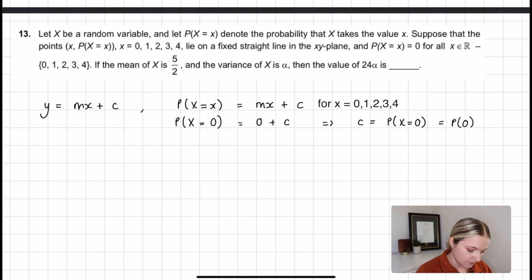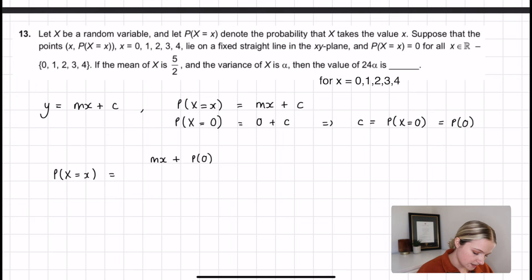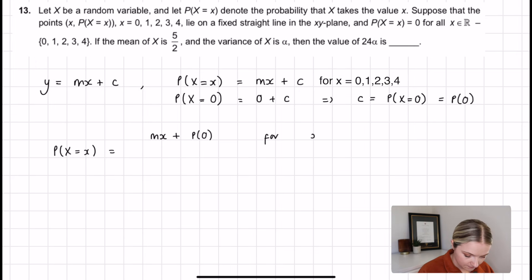Now we know what c is, we can write a formula for P(X=x) for these different numbers. Because we know that they're on a fixed straight line, we can say that P(X=x) equals mx plus P(0) for x in 0 to 4, because we're told that. But we're told that outside of that range, P(X=x) equals 0, so we'll put otherwise. Now we have this formula for P(X=x), which is great. We can now start playing around with some of the additional features that we're told.